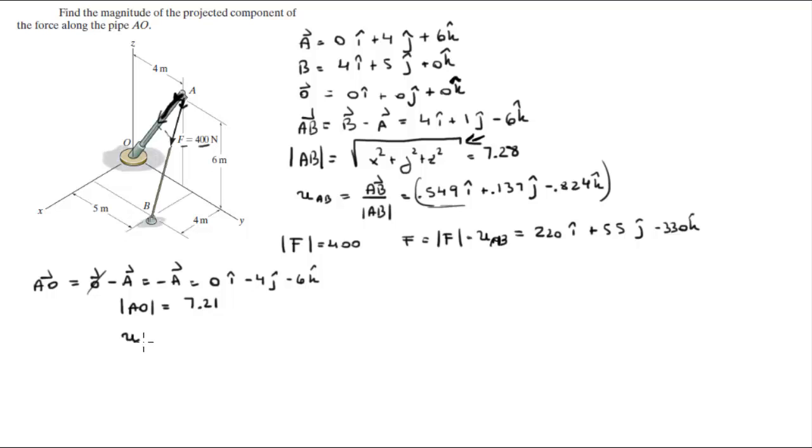The unit vector AO is found by dividing AO by its magnitude. So dividing these three values by 7.21 gives you the unit vector which comes out to be 0 in the i, minus 0.555 in the j, minus 0.832 in the k.